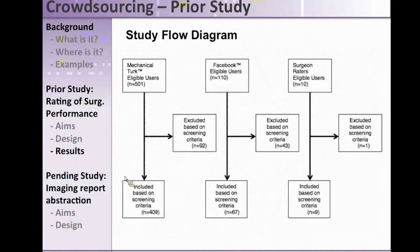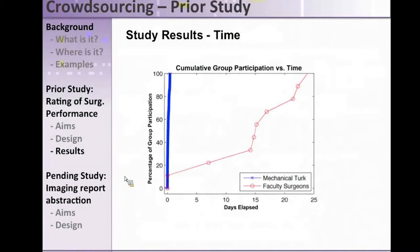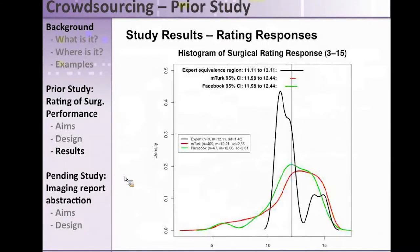The flow: we recruited 500 mTurk ratings and 409 passed both tests. We had 110 Facebookers and only 67 passed both tests — they got filtered out a lot more, which may be telling. Nine out of 10 surgeons passed. We turned the study on one afternoon and in the middle of the night it was done — we got 500 responses from Turkers in a matter of 10 or 12 hours.